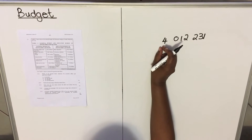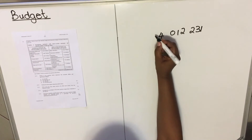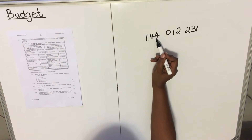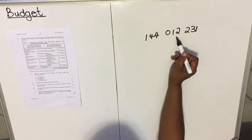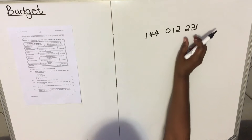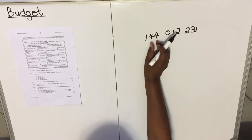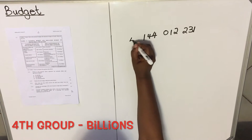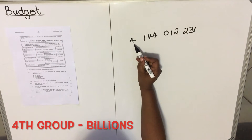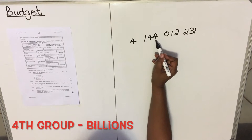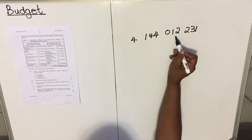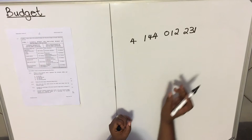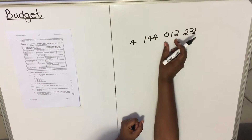Every time it's three, three, three — when you go to the next three digits, the name changes. So it's twelve thousand two hundred and thirty-one; then one hundred and four million, twelve thousand two hundred and thirty-one. When you go to the next group, these are billions — so four billion, one hundred and forty-four million, twelve thousand two hundred and thirty-one. Memorize this: the groups go hundreds, thousands, millions, billions.